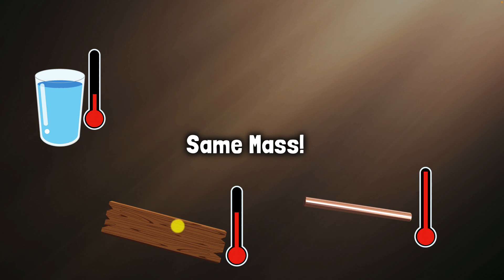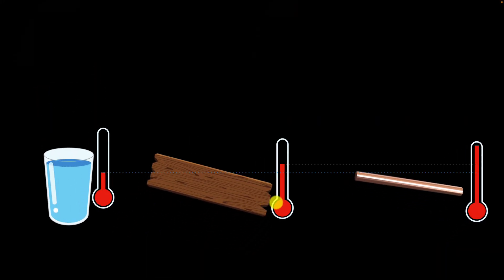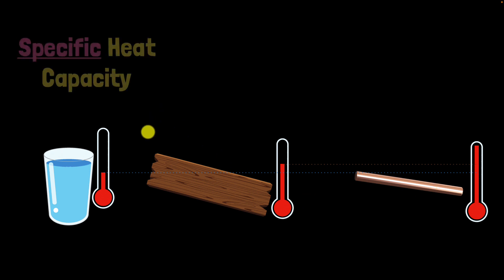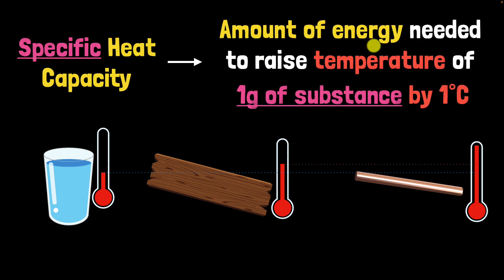Why did that happen? They have the same mass. It turns out that different materials absorb heat in different ways. Water absorbs heat such that its temperature does not increase as quickly compared to wood, but copper absorbs heat such that its temperature increases a lot compared to wood. To tackle these differences, we introduce a new quantity called specific heat capacity, defined as the amount of energy needed to raise the temperature of one gram of substance by one degree Celsius.